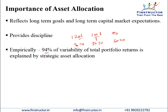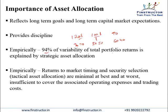In most diversified portfolios, it is a decision of how much equity and how much debt to keep — after that, one diversified portfolio doesn't give very different return from another in the long run. Returns to market timing and security selection are minimal at best, and at worst, insufficient to cover operating expenses, fund management fees, and trading costs. Hence, asset allocation is one of the most important processes in portfolio construction, and we need to understand the different theories behind constructing it.